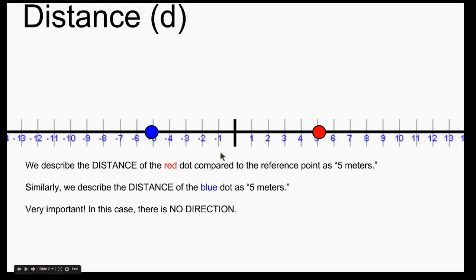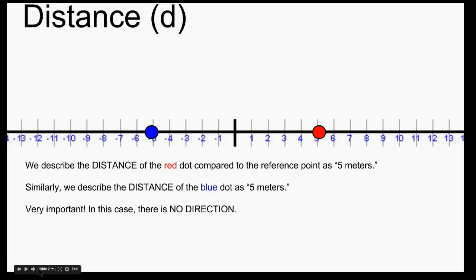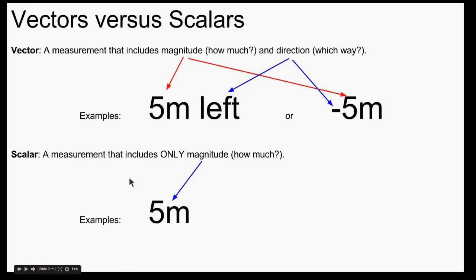Distance is similar in some ways and different in others. The distance of the red dot compared to the reference point is just 5 meters, and the same is true for the blue dot — we'd also say that the distance is 5 meters. For distance, direction is not important. So position and distance have some differences to them.